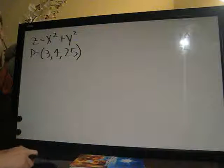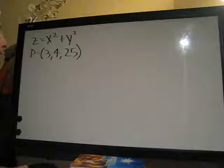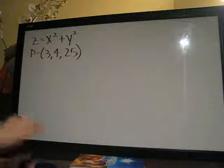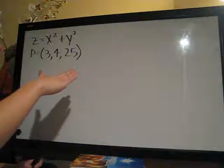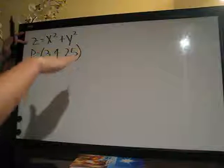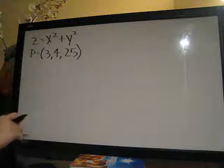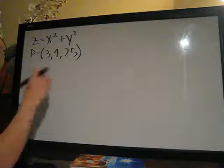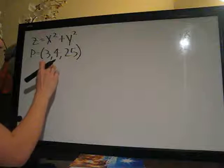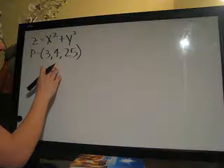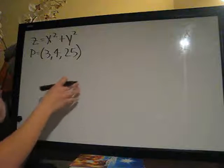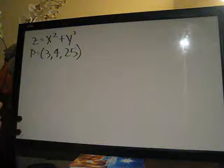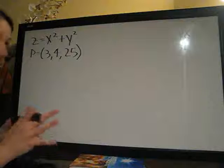So they're asking for the equation of the plane intersecting the graph of this function at this point. Just like in calculus when we were only using the single variable, they were asking for the line intersecting the graph at a certain point. It's just the plane intersecting the graph at a certain point because it's like 3D instead of 2D.